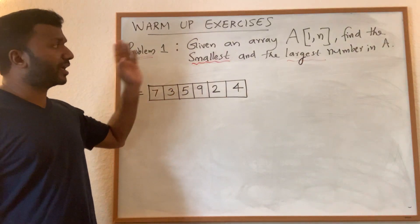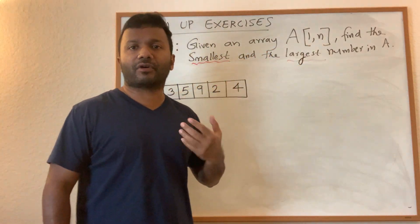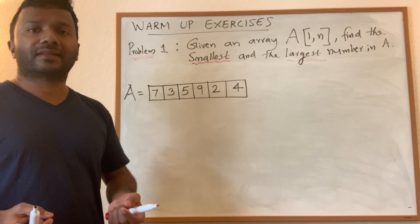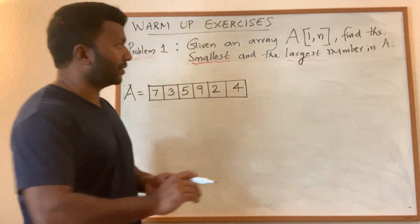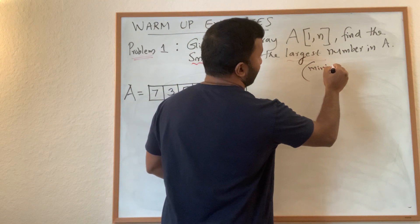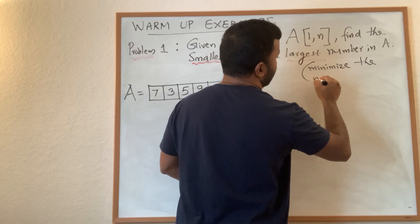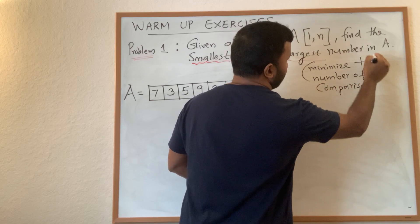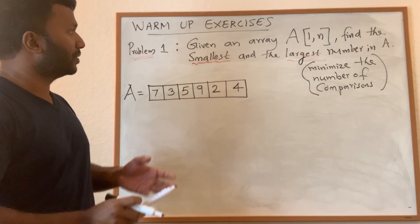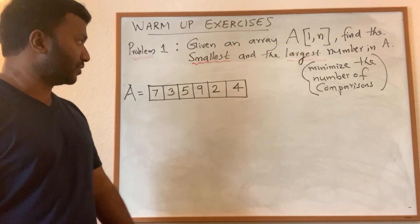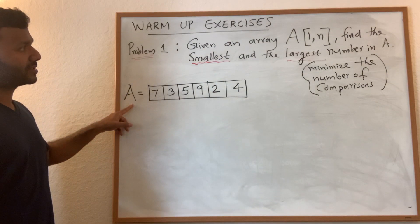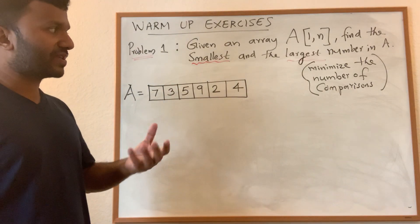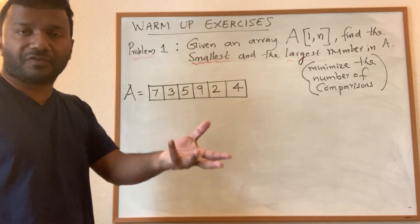Here is our first problem: given an array A of size n, find the smallest and the largest number in the least number of comparisons possible. Your objective is to minimize the number of comparisons — that is the basic operation. Now let's look at the simple straightforward solution, sometimes called the naive or brute force solution.